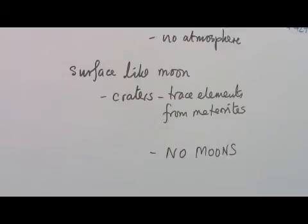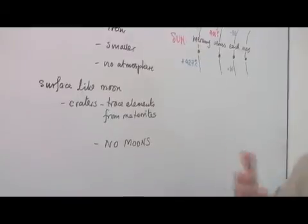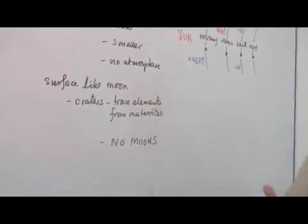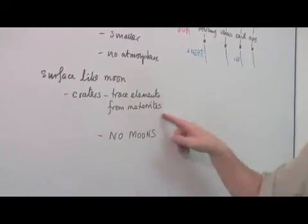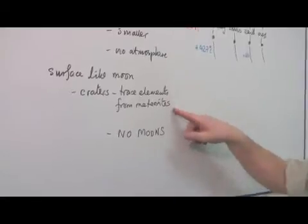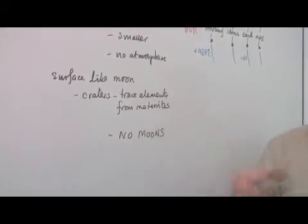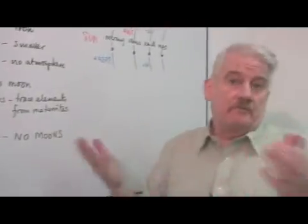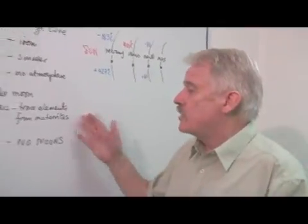And its surface is like the Moon. It's full of craters, because there's no atmosphere to burn up meteorites coming in. So the meteorites strike the surface, and therefore you would expect to find trace elements from meteorites of various different minerals on the surface of the planet.